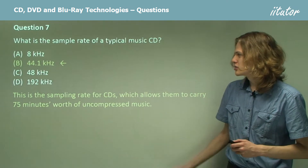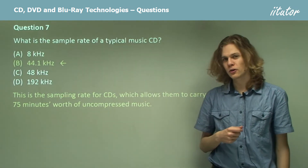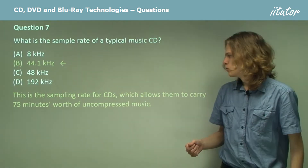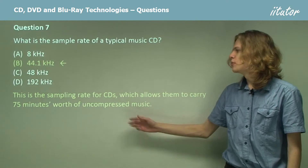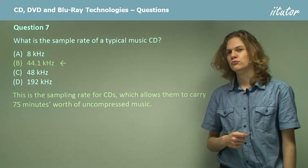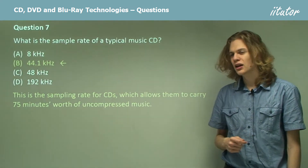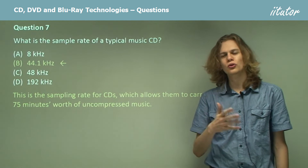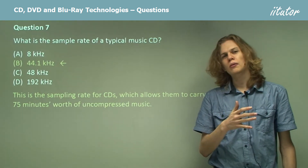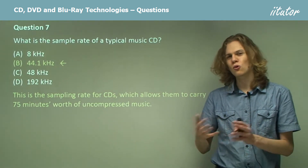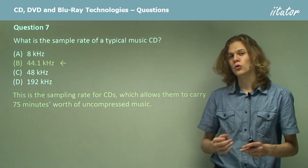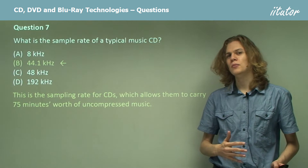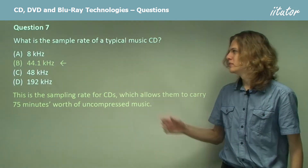Storing at a sample rate of 44.1kHz on a CD will allow you to store about 75 minutes of music. If you stored at the same sampling rate on a DVD or a Blu-ray disc, you'd be able to store much more, because DVDs and Blu-ray discs can carry much more data than CDs.